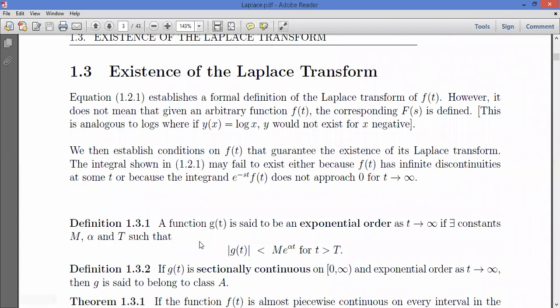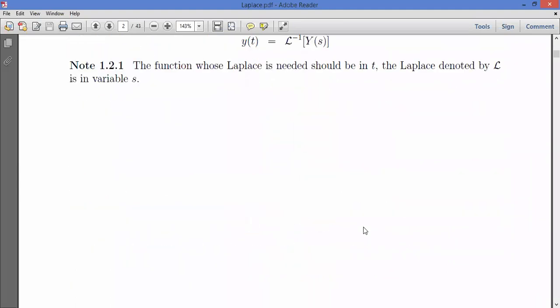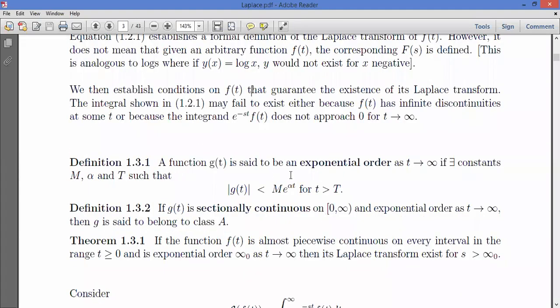We have a definition. There is a preamble to what we want to do here. If we have a function, if we look at it in terms of a generic function g(t) which is an exponential of order, of course by definition we say we move from zero to infinity. This is the definition. We are defining, restricting ourselves to the definition. We are saying there will exist constant M, α, and t such that the norm of that function, this one will cater for the negative and positive, is less than that for t greater than that.